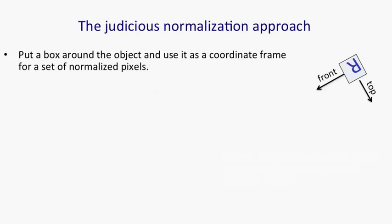A second approach is what I call judicious normalization. So if you look at that upside down capital letter R on the right, I put a box around it—not very well, in fact—and I've labelled a top and a front for that box.